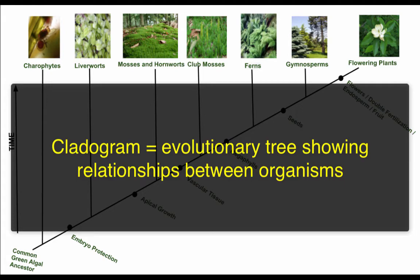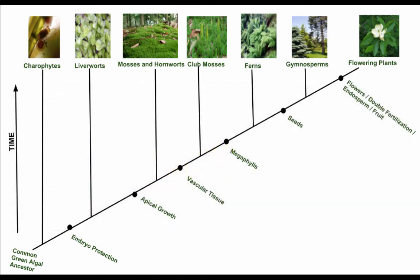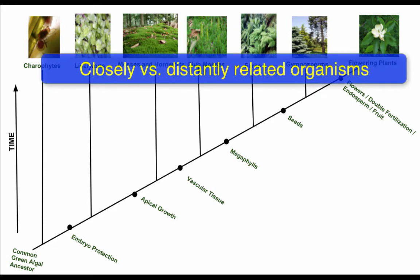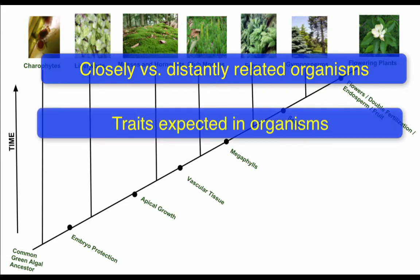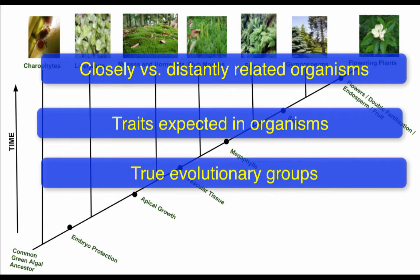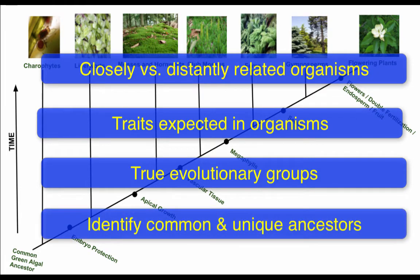So if you look at this cladogram here, the information that I glean from it is I can tell which organisms are more closely related to each other, I can tell what traits I expect to see in certain organisms, identify true evolutionary groups between these organisms, and I can locate common ancestors and unique ancestors between organisms.